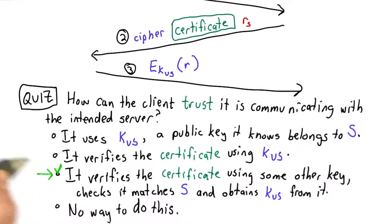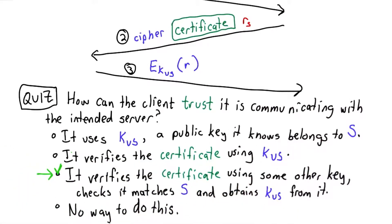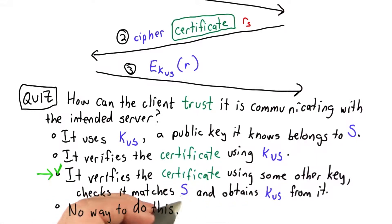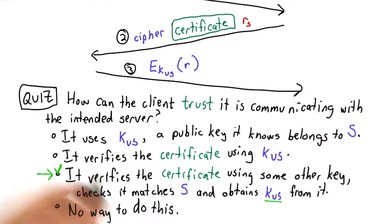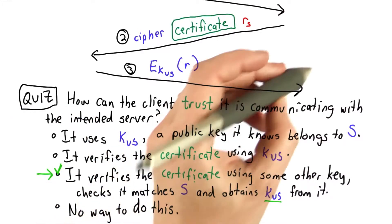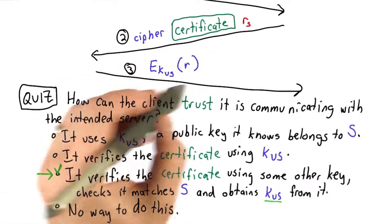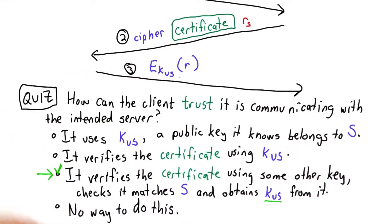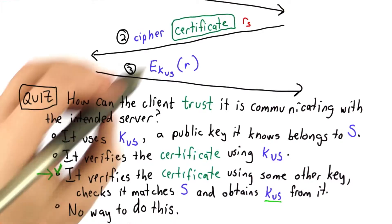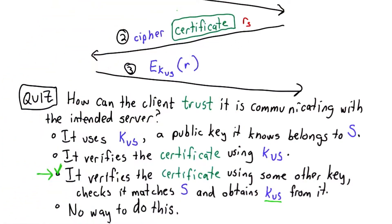The correct answer is the third choice. What the client needs to do to know that it's talking with the correct server is know that it's talking with server S, and know that that's a public key owned by S. If that's correct, then S owns the corresponding private key, and only that server can decrypt this message and obtain the right session key. So this is the problem the certificate is designed to solve.